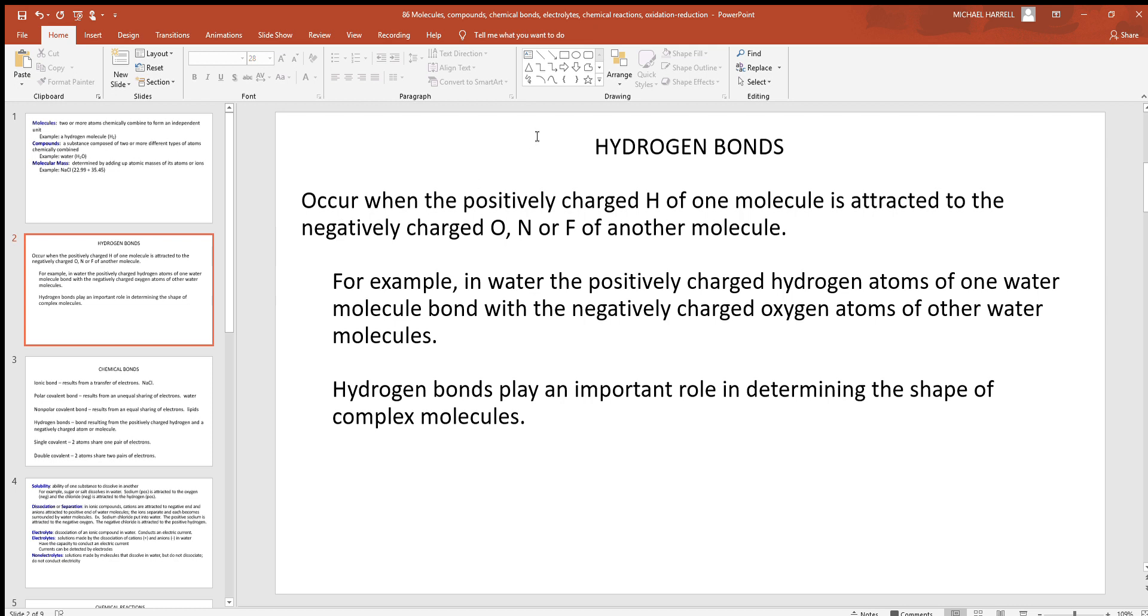Hydrogen bonds found in many places throughout the body, forming structure and shapes of important molecules. They occur when the positively charged hydrogen of one molecule is attracted to the negatively charged oxygen, nitrogen, or fluoride of another molecule. So hydrogen really likes to bond to get together with those other three types of atoms. Example of this is when water, the positively charged hydrogen atom of one water molecule combines with the negatively charged oxygen atom of another water.